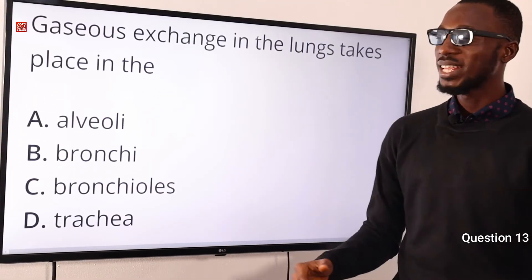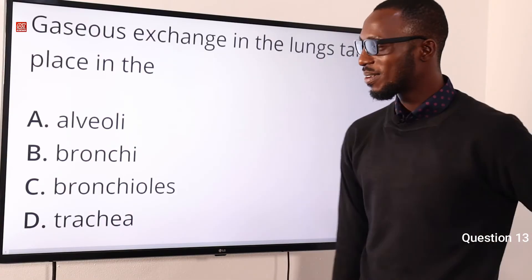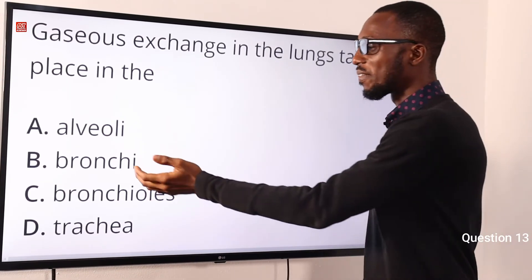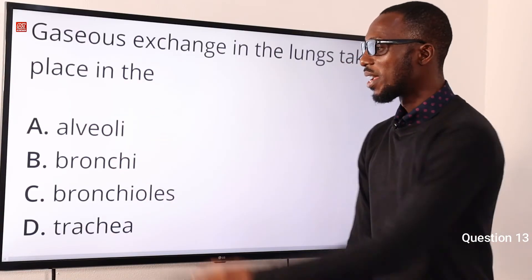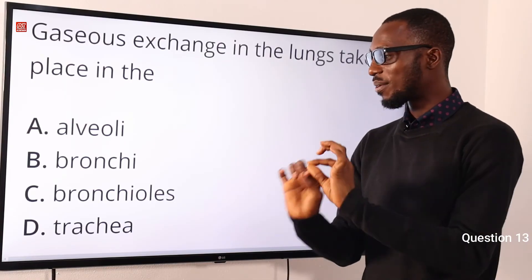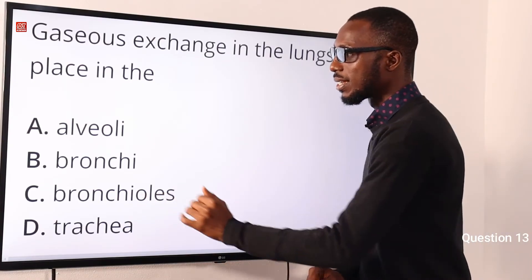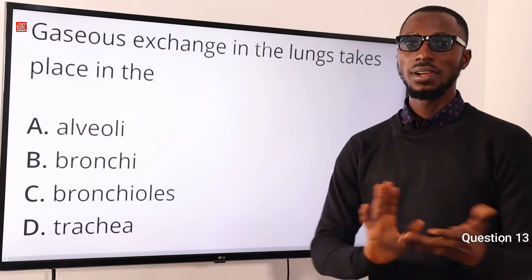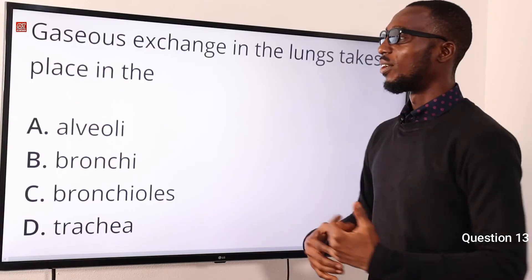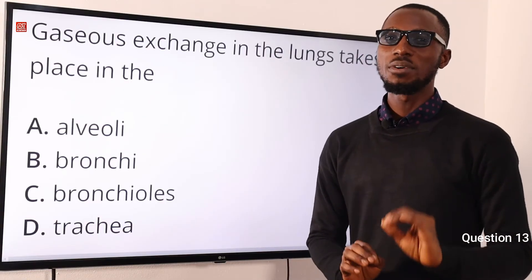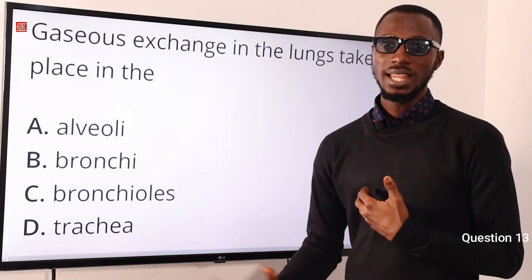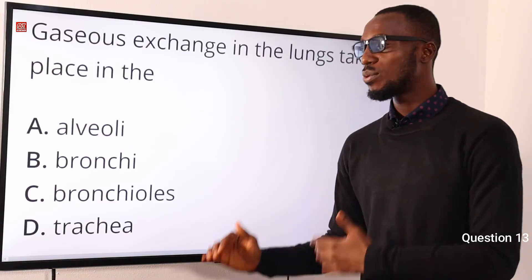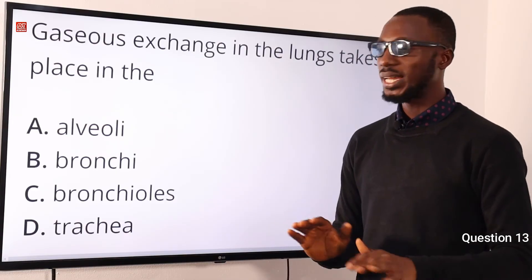Question 13. Gaseous exchange in the lungs takes place where? Talking about the respiratory system: air comes in through the trachea, then we have the bronchus — the two are the bronchi. This branches into the bronchioles — small, tiny root-like structures — then we have the alveolar sacs. It is in these sacs where gaseous exchange takes place. The air coming in contains high oxygen and little carbon dioxide. Blood coming from the body contains high CO2 and low oxygen. There is a diffusion gradient.